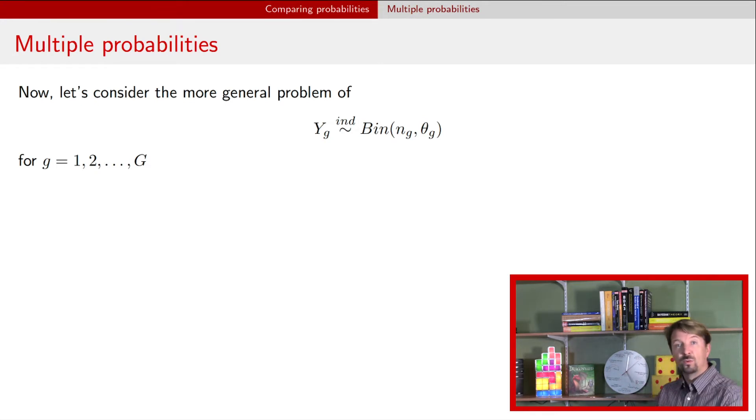And so we're going to have different observations for our different groups. That's what G represents. Each group will have some number of attempts and some number of successes. And at least to start out, we're going to assume that they all have their own probability of success, theta G. And the question is really to make statements about those different parameters, theta G.